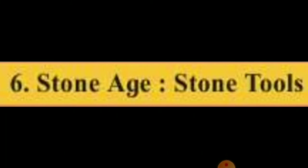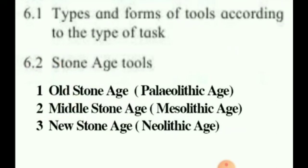Hello students, today we are going to learn our sixth chapter: Stone Age Stone Tools. In this chapter we have learned 6.1 types and forms of tools according to the types of tasks, and 6.2 stone age tools. We already covered the old stone age, that is the Paleolithic age. Now we are going to see the second one: the middle stone age.